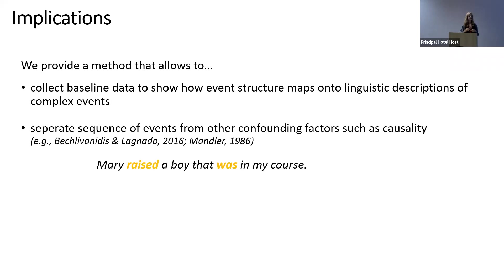For instance, in a sentence like 'Mary raised a boy that was in my course,' you probably get a strong forward-shifted interpretation: Mary first raises the boy, and then the boy is in my course. The question is why this is the default. One possible explanation is that to partake in an academic course you need to be raised first, so the causal connection between the two events could in fact override interpretations arising from event structural properties.